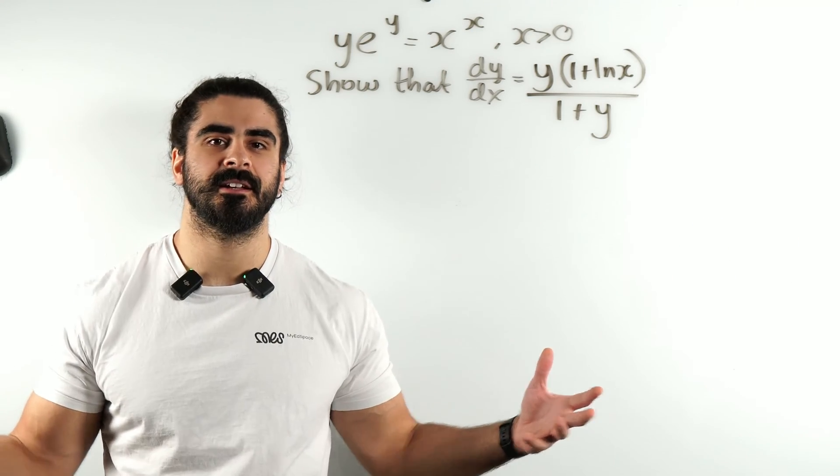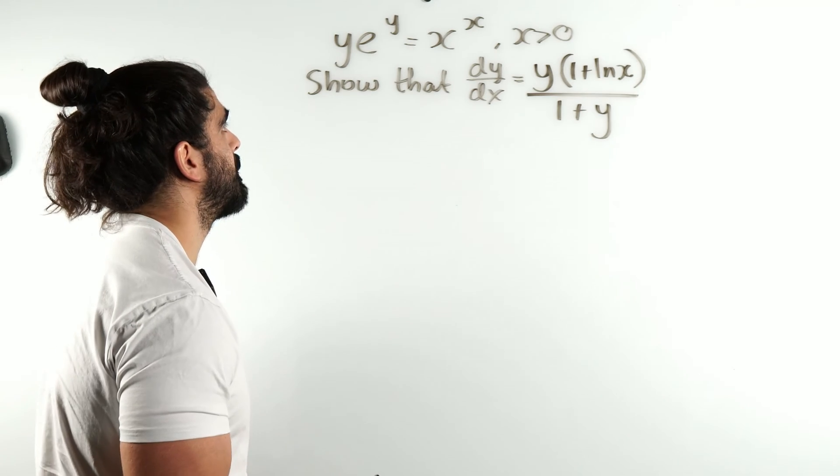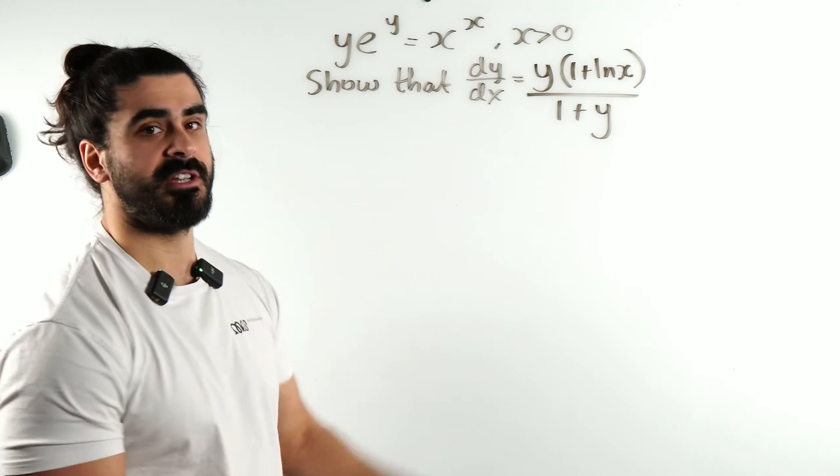Learn, learn, learn. Implicit differentiation. We've got y times e to the y equals x to the x, where x is positive. Show that the gradient is this.